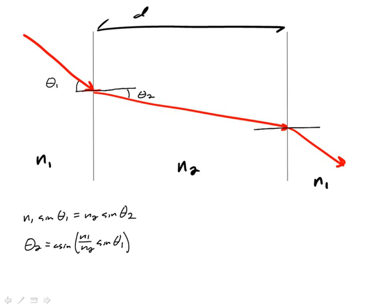We know by simple geometry that since these sides of our slab are parallel, that angle theta 2 there is going to be theta 2 here.